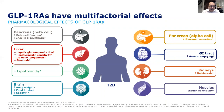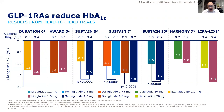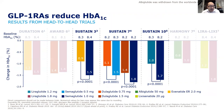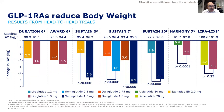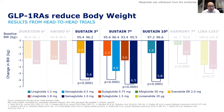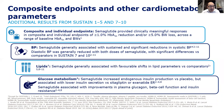Looking specifically at Ozempic (semaglutide): at different doses it decreased A1C more than other GLP analogs, and it also reduced body weight more than other GLP analogs. This summary slide shows that Ozempic reduces A1C, promotes weight loss, and improves glucose metabolism and blood pressure as well.